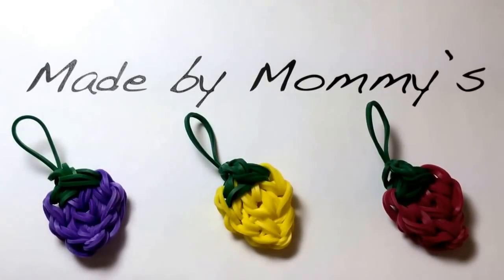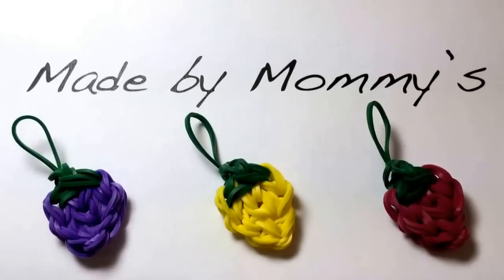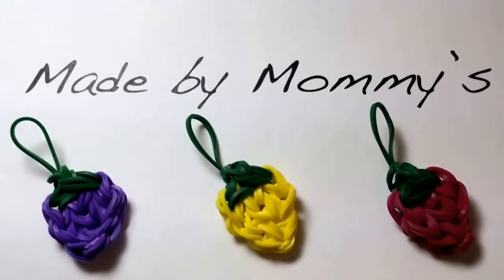To make the Christmas light charm, you will need 7 green rubber bands and 19 rubber bands of the color that you want the light to be. And other than that, you'll need a hook and a loom.